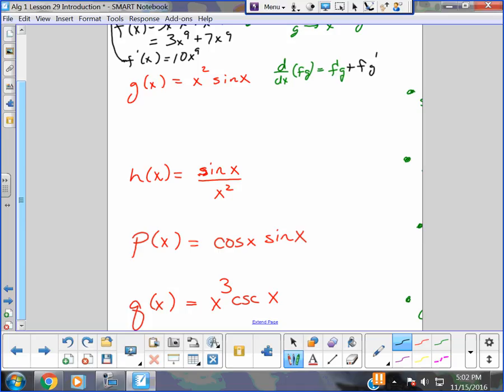So g of x prime equals, all right, derivative of f prime. So I'll make the first thing f. Derivative of x squared is simply 2x times what the other thing is, sine x, plus. All right, I did derivative of x squared, so I write x squared. Now I've got to do derivative of sine x, which is simply cosine x. And everybody, I'm done. That's the derivative. That is the product rule.